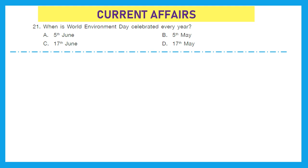Moving to our next section, that is Current Affairs. Question 21: When is World Environment Day celebrated every year? World Environment Day is celebrated every year on 5th June, and it encourages awareness and action for the protection of the environment. Option A, 5th June, is the right answer.